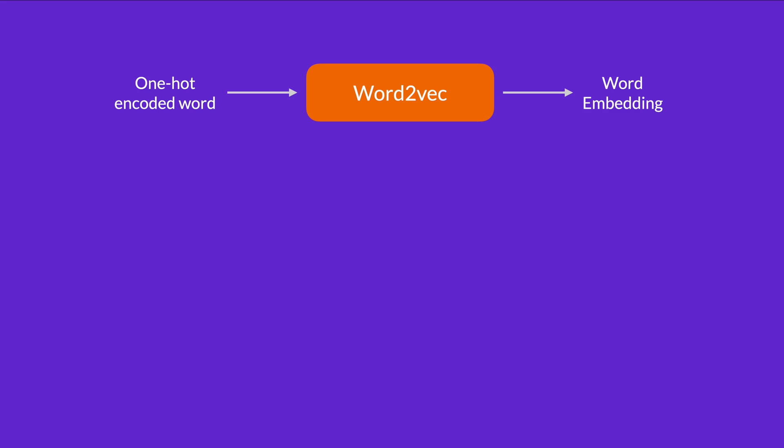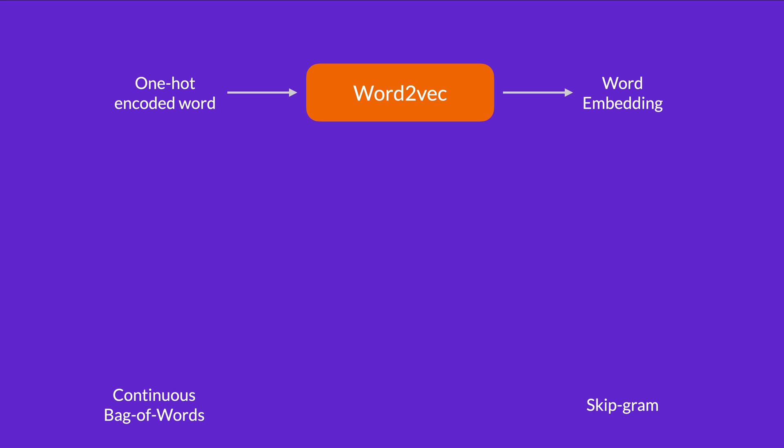Another approach is Word2Vec. Word2Vec works by getting the one-hot encoded versions of the words and creates embeddings of these words by using the context of the sentence too. There are two different approaches to Word2Vec: one is called continuous bag of words, and the other is called skipgram. Given a corpus of text — a lot of sentences — what we do is divide these sentences into groups of n words. For the sake of this example, let's say three.